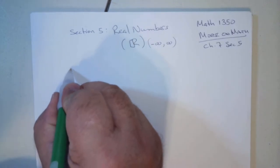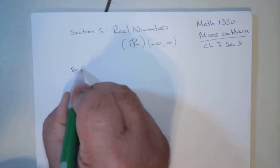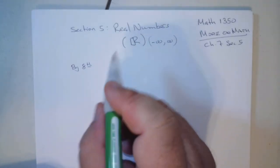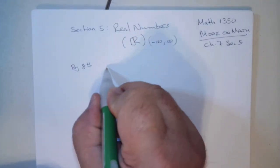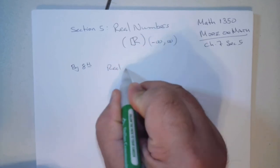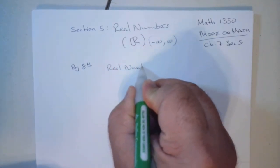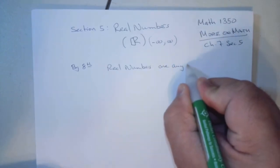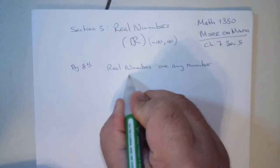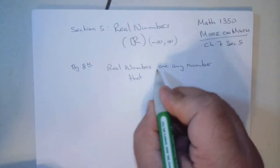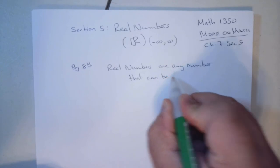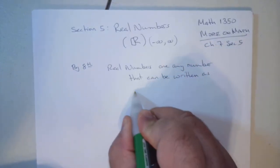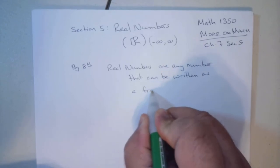Education-wise, by the eighth grade, the students should know that first, real numbers are any number that can be written as a fraction.